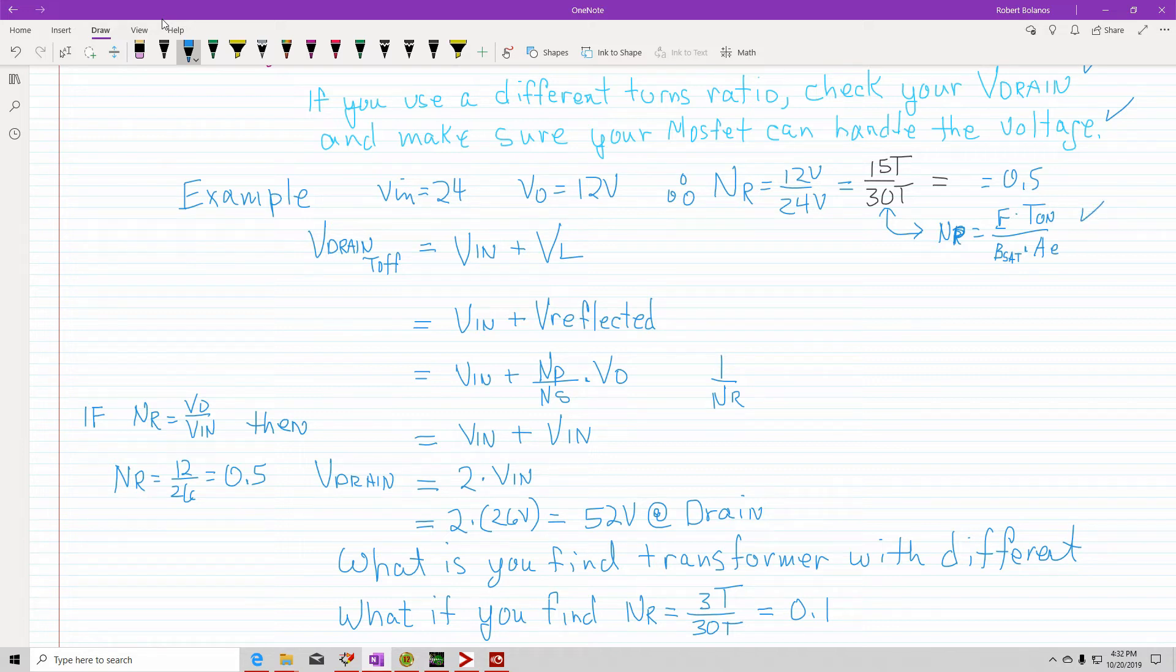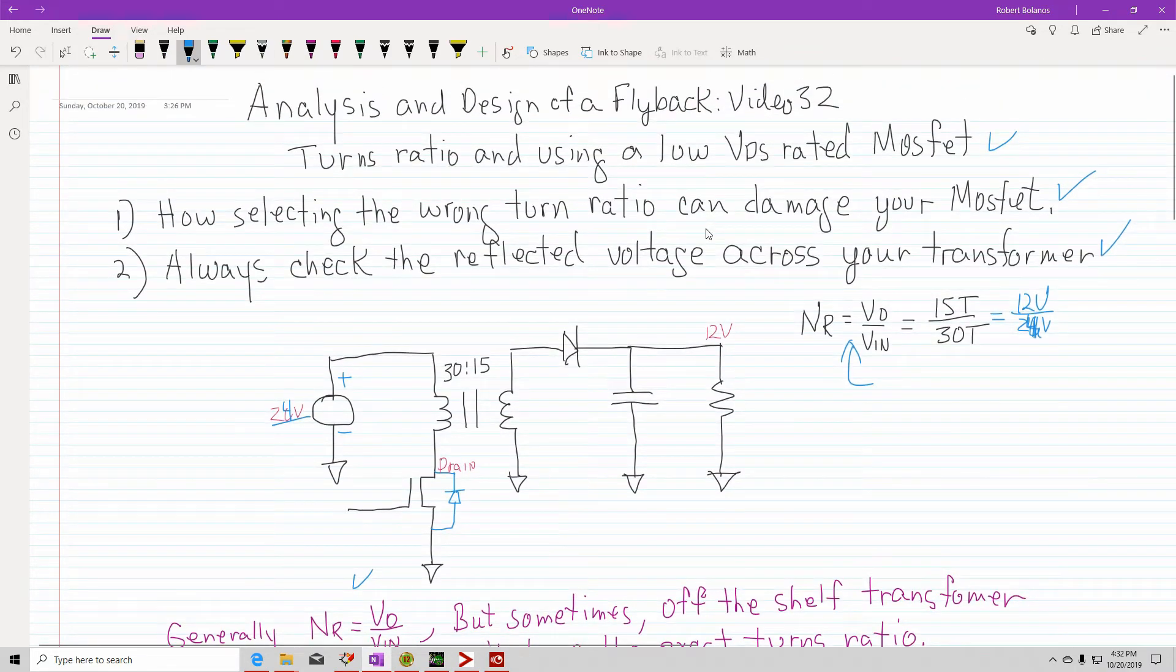So then the equation to check the drain during T off is VN plus VL. So you're going to have this voltage across your VN. And then when it's reflective, this is negative, this is plus. So you're going to have a voltage that is reflective. So if you'll notice, it's this voltage plus this voltage will equal the drain. So V drain, VD equals VN plus VL reflected.